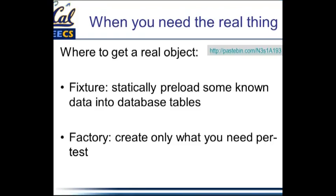So the question is, where are you going to get a real movie to use in a test? There are two major categories. One is a fixture — a term from mechanical engineering where a fixture holds the object being tested in a known position. In software testing, a fixture is one or more data items preloaded at the beginning of your test cases. Or you could use a factory, which if you come from the Java world is similar to the factory concept there — you create the specific objects you need on a test-by-test basis, and destroy them when those tests are done.